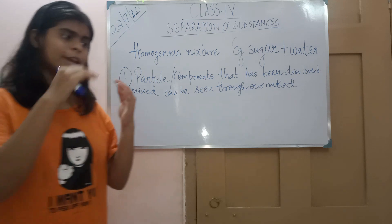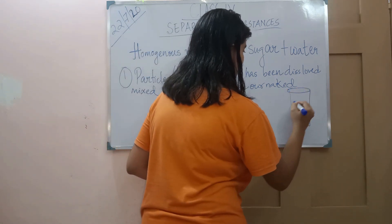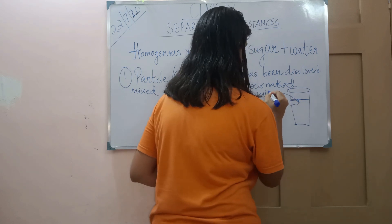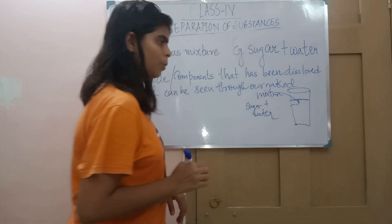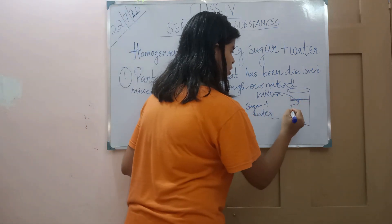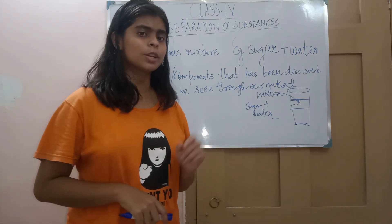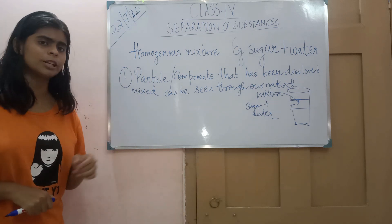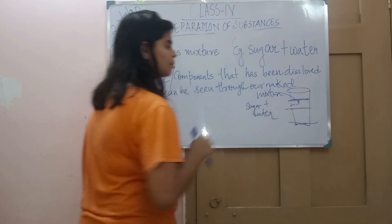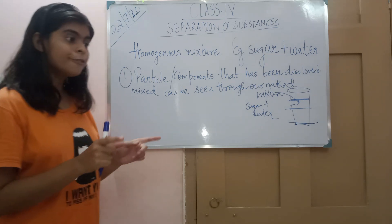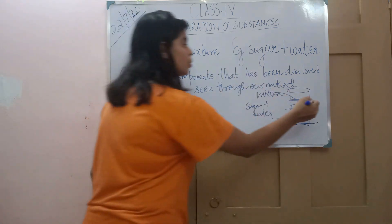Whatever layer you take from the above, below, or middle — this mixture is sugar plus water — whichever layer you drink from, you won't find any difference in the sweetness. In each layer, you will find the same sweetness. The sweetness found in the upper layer is similar to the middle and similar to the bottom. Since you can't find any difference, there is no variation in the sweetness. The sweetness is equally distributed throughout the solution.